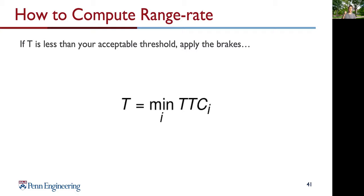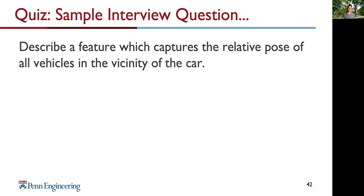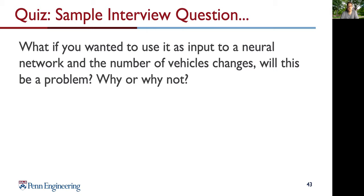To sum it up on autonomous emergency braking: we have a time to collision we minimize, and if it falls under the threshold, we apply emergency braking. For you at home, two additional quizzes: first, think about a feature that captures the relative pose of all vehicles in the vicinity of the car. Second, a follow-up question: what if you wanted to use that as an input to a neural network, and the number of vehicles changes — will this be a problem, and why or why not? You can think about this at home.